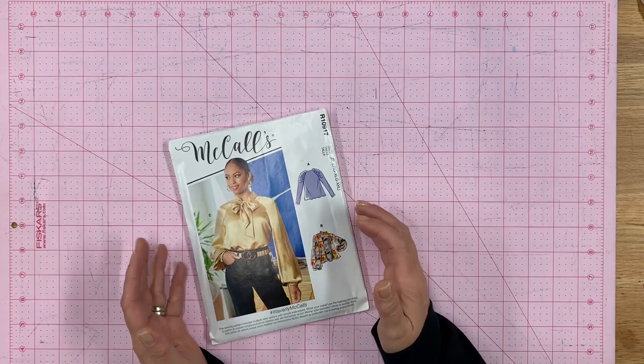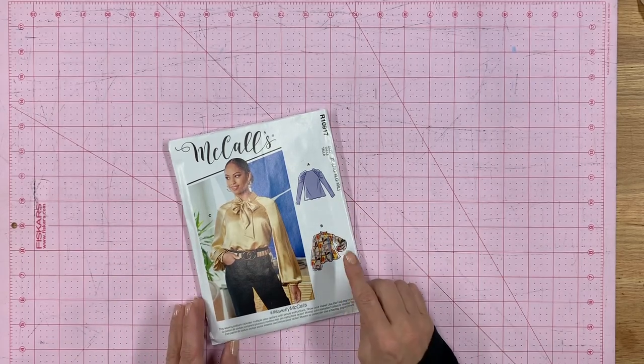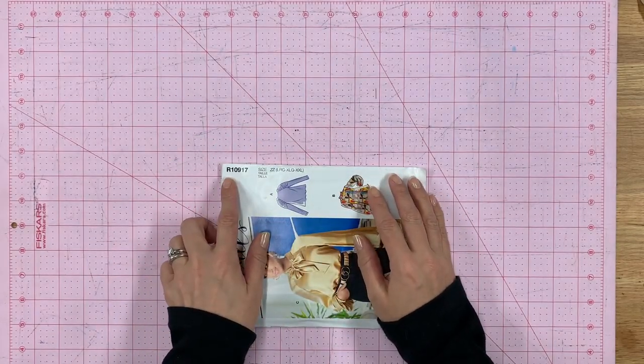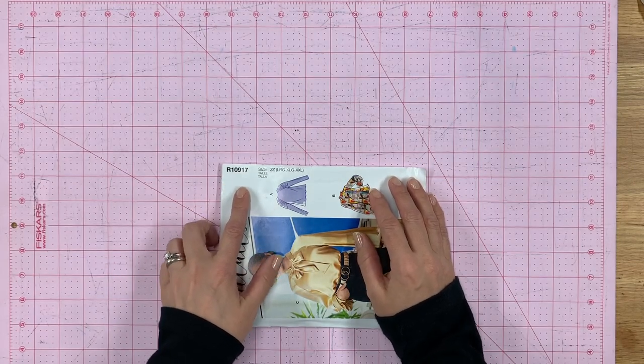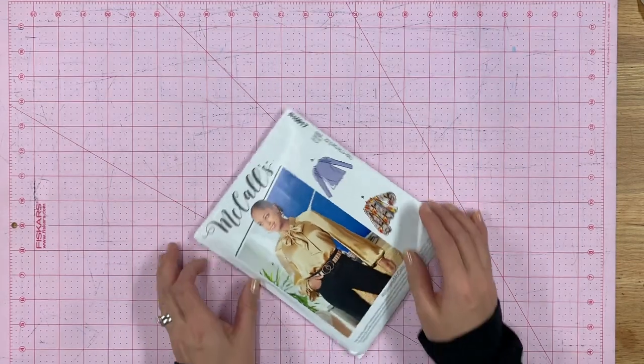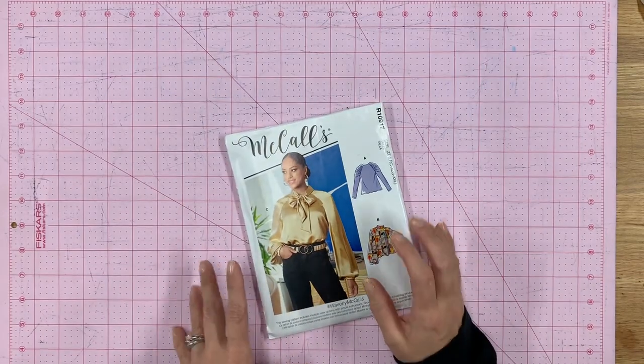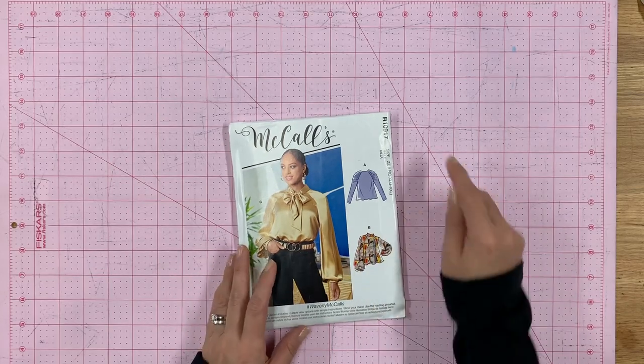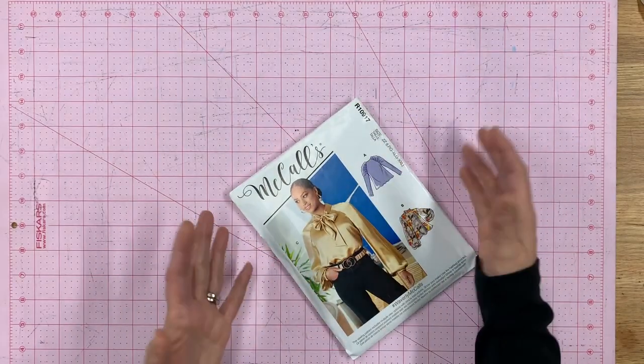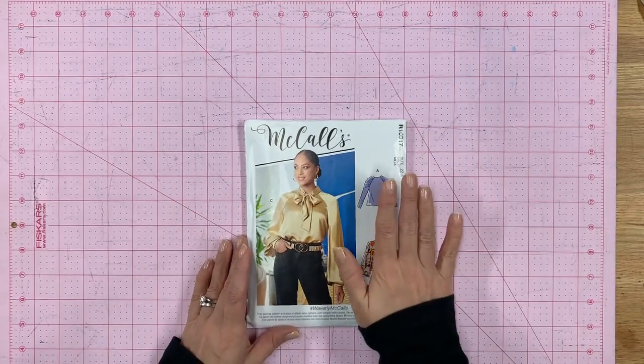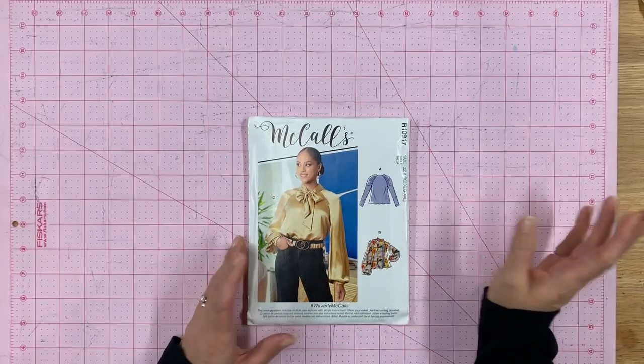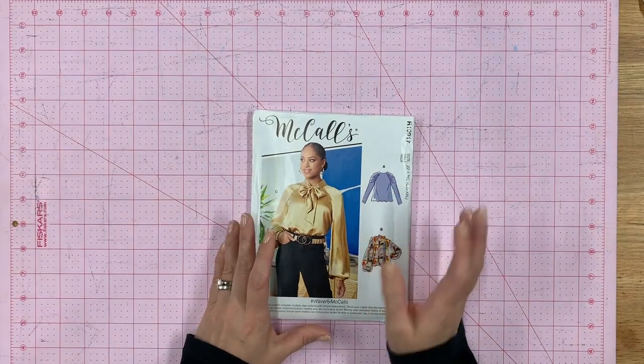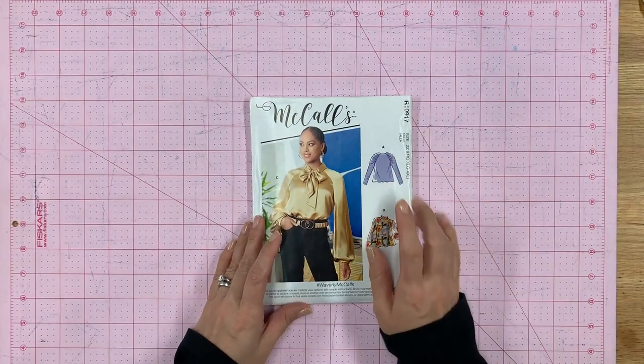We're going to be looking at a pattern that just came out from the McCall's early spring line. It's called Waverly McCall's and it says R10917, but actually this pattern, if you find it inside the drawers, the number is M8147. When you see R10, anything with R just means it has to be on top of the rack. These are definitely patterns that they want you to see right away.